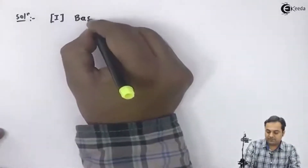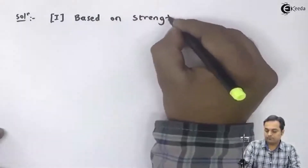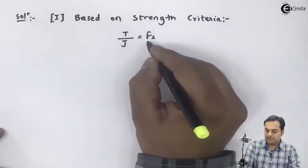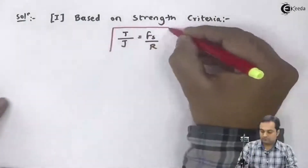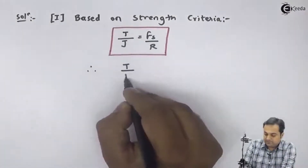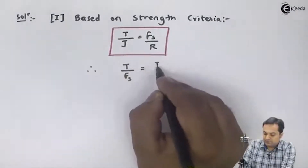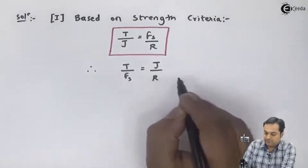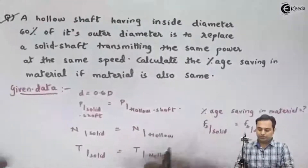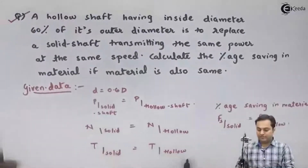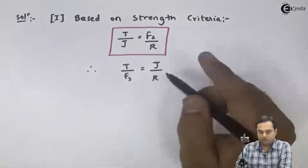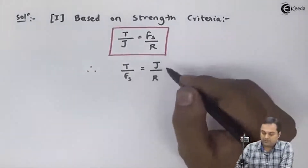Based on strength criteria, the relation is T/J = fs/r. Rearranging, we keep T and fs on one side and shift polar moment of inertia J to the other side. Since torque in the solid shaft equals torque in the hollow shaft and shear stress values are the same, the ratio T/fs is the same, so J/r will also remain the same for both shafts.